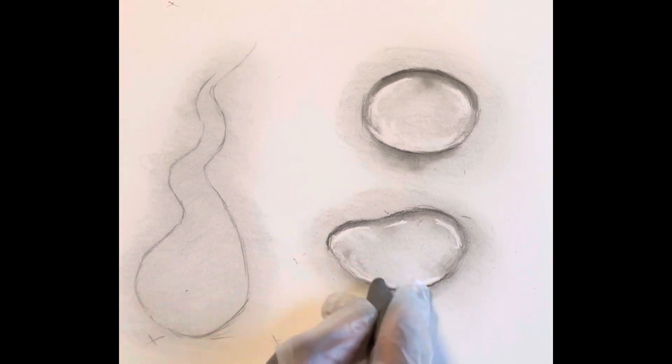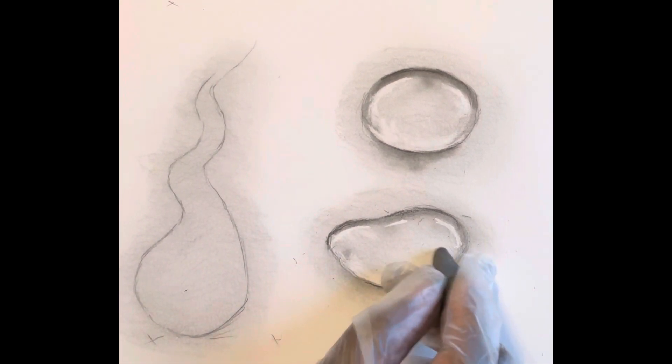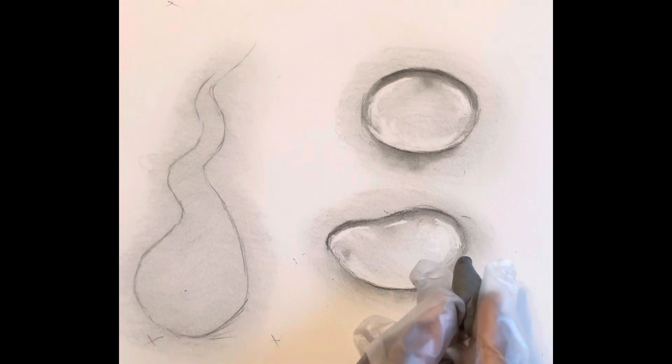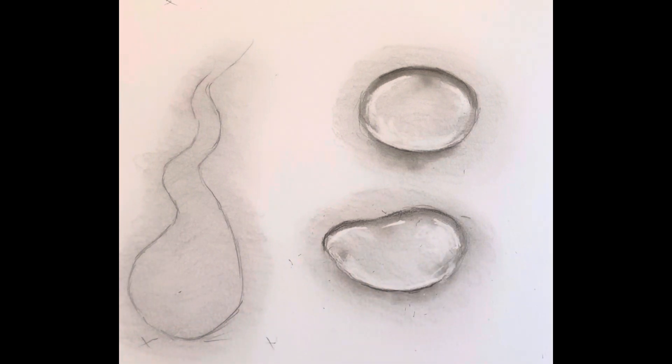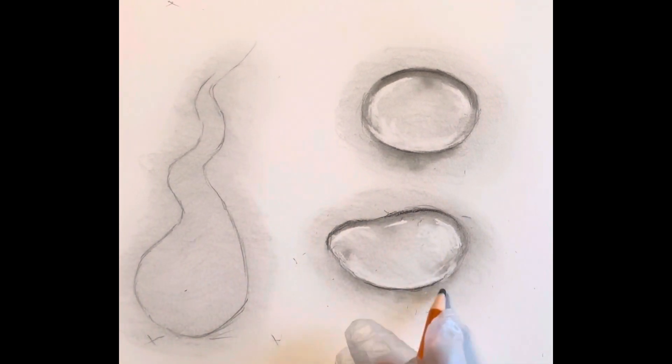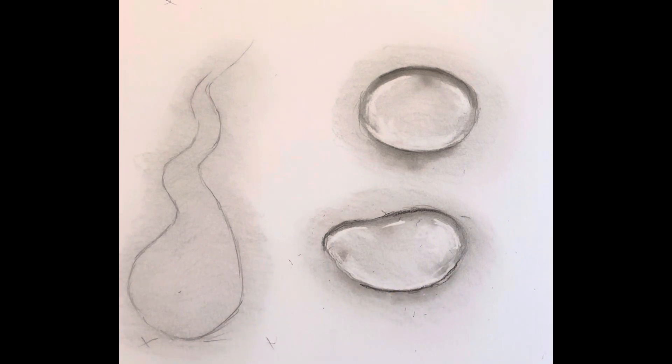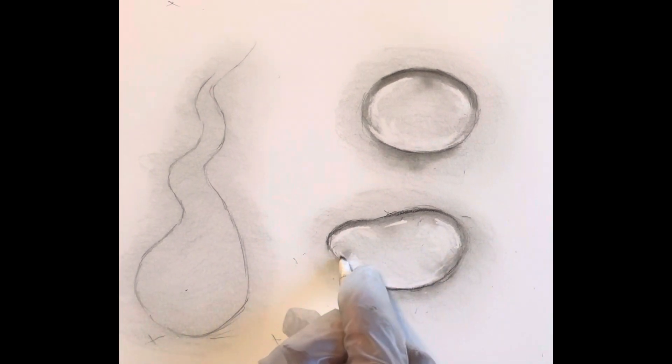I use a kneaded eraser to pick up larger areas of pigment to create a bigger highlight. I'm not trying to make this look pretty and smooth—nothing in real life is that homogenous or that perfect. So you're going to see some irregularities in where light and dark fall.